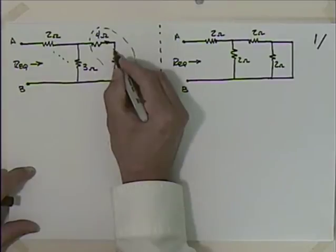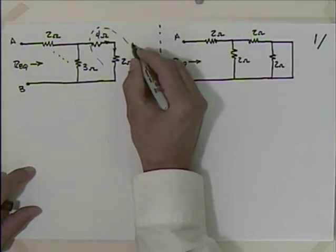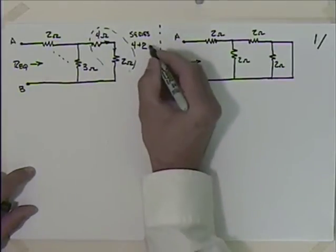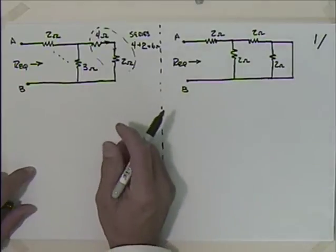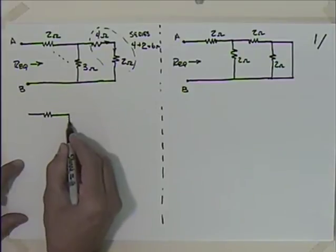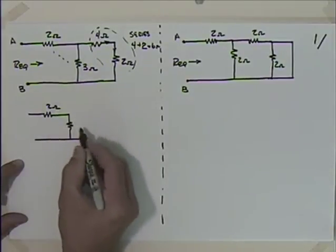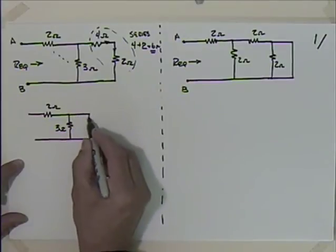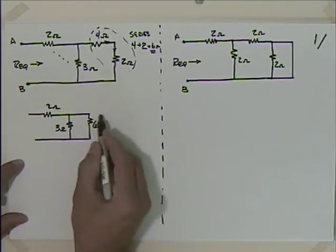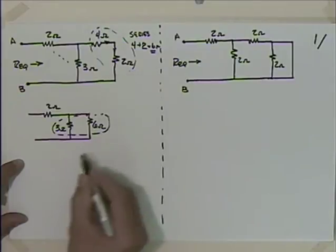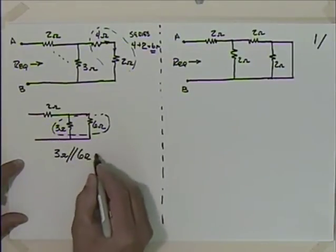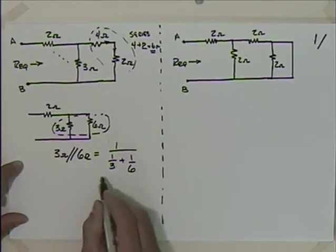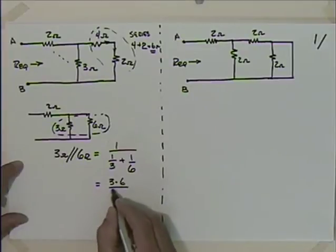Any current that goes through this one is going to go through that one — they are in a series arrangement. So you have something as easy as 4 plus 2, which gives us 6 ohms. Then it's worth redrawing. So we take this 2 ohms, this 3 ohms, and this newly found 6 ohms, and we recognize that now these are in parallel — 3 ohms in parallel with 6 ohms.